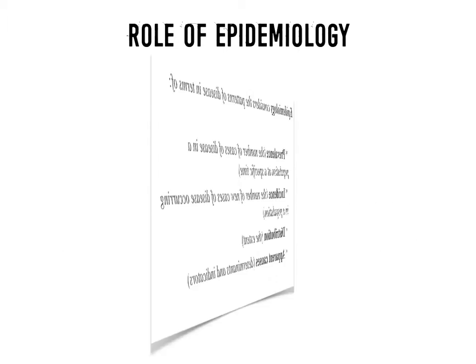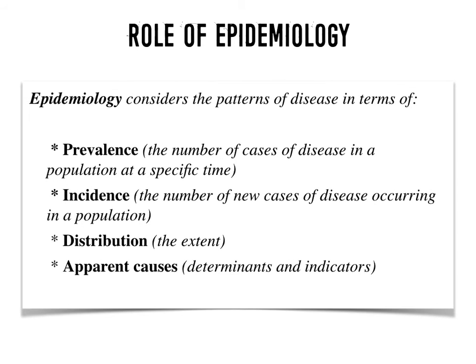Epidemiology considers the patterns of disease in terms of prevalence — the number of cases of disease in a population — incidence — the number of new cases occurring in a population — and distribution, which is the extent and the apparent causes that link back to the determinants and indicators.